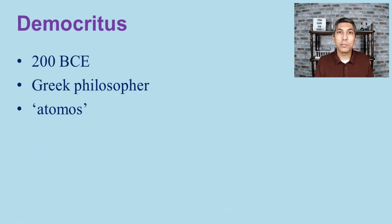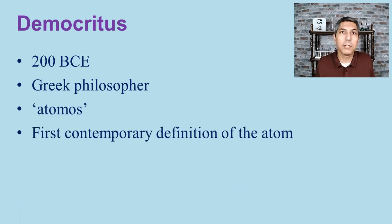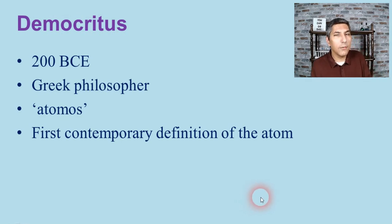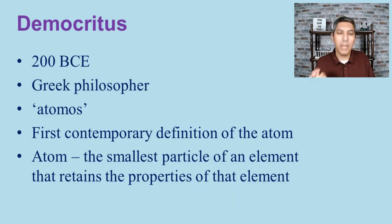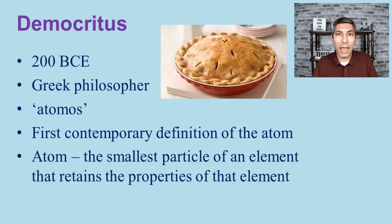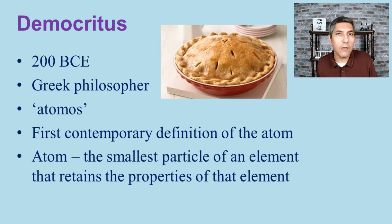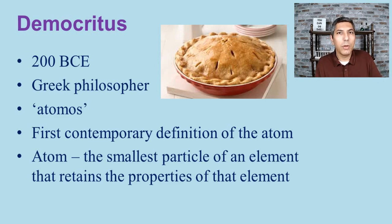He called that very tiny, indivisible piece of matter 'atomos,' which in Greek means indivisible. We give Democritus credit for the first contemporary definition of the atom. Today we say an atom is the smallest particle of an element that retains the properties of that element — and his definition essentially still works today. If we think about cutting a pie in half repeatedly, after about 90 cuts we'd get down to what is essentially an atom of that apple pie.